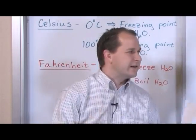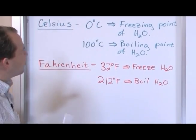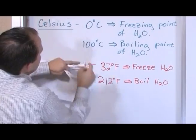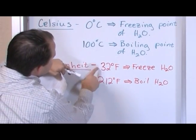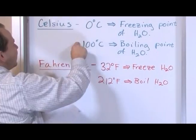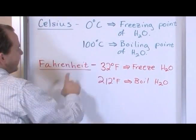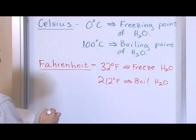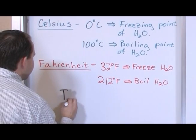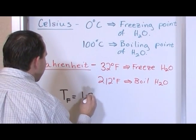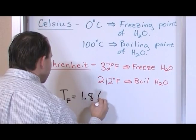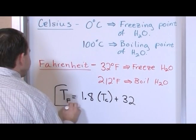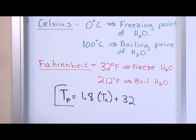There's not a straight conversion factor between these two, and the real reason is because there are 100 units between 0 and 100 degrees Celsius, but there are not 100 units between the freezing and boiling points of water on the Fahrenheit scale. So the two scales are set up completely differently, which makes it not quite as easy to convert. But there is a simple equation: the temperature in Fahrenheit equals 1.8 times the temperature in Celsius plus 32.